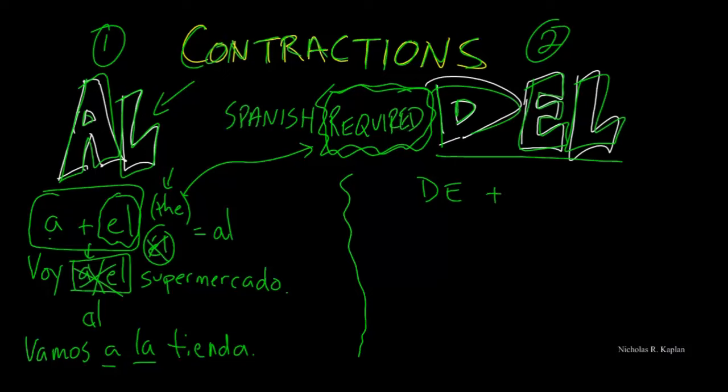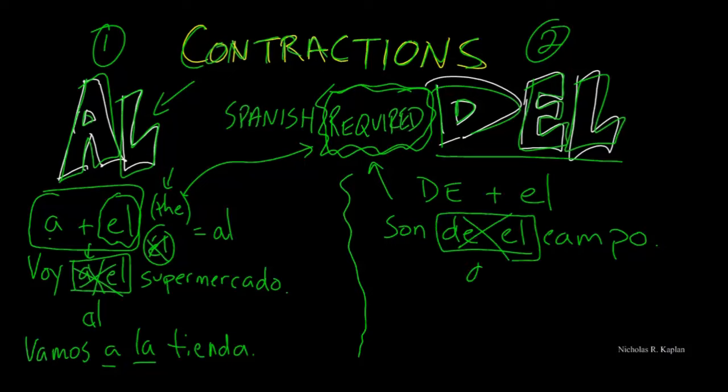Contraction number two is 'del.' I know it's not as exciting as al, but this one is de plus el, of plus the. What do I want to write for this one? I could say something like they're from the country. So I have de plus el, and in Spanish our contractions are required. We have to form the contraction, and so we will change this to 'son del campo.'